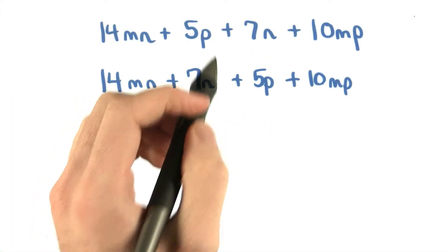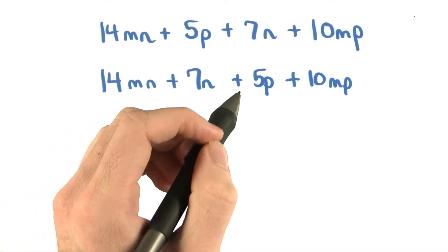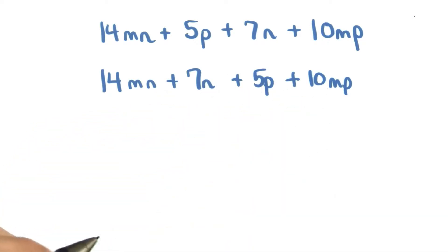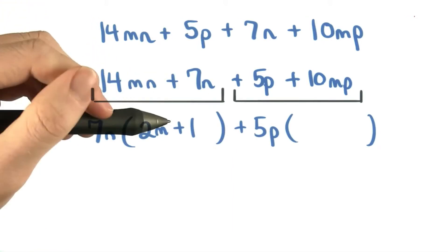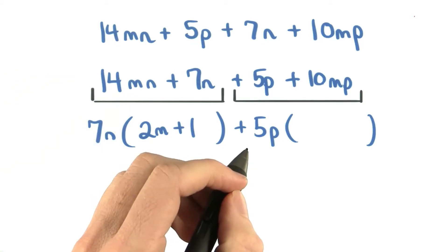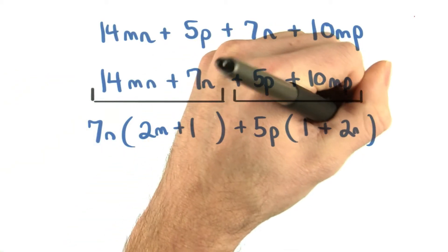If we switch the middle two terms, we can see that we'll get a common factor of n in the first terms and a common factor of 5p in the second terms. If we factor a 7n from the first two terms, we'll be left with 2m plus 1. And if we factor a 5p from the second term, we'll be left with 1 plus 2m.